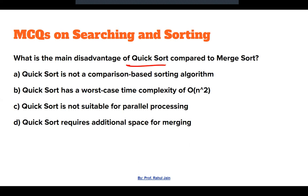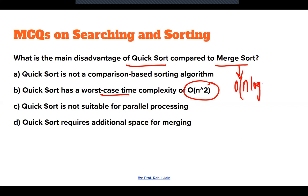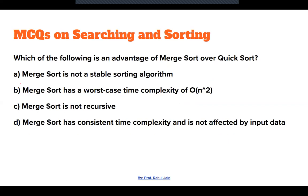Next: What is the main disadvantage of quick sort compared to merge sort? Quick sort has a worst-case time complexity of O(n²), whereas in merge sort all three cases — best, average, and worst — have O(n log n). So option B is the correct answer.